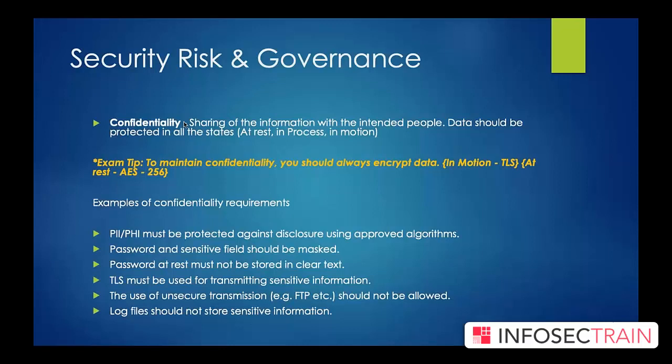In security risk and governance, the first fundamental is the CIA triad. Confidentiality means protecting information from any unauthorized access. If you have a piece of information intended for only the right group of people or a specific individual, you need to make sure that information is only accessible by the intended audience, protecting it from unauthorized disclosure.